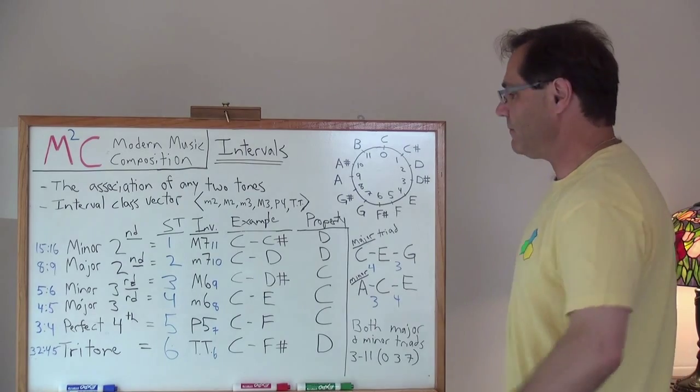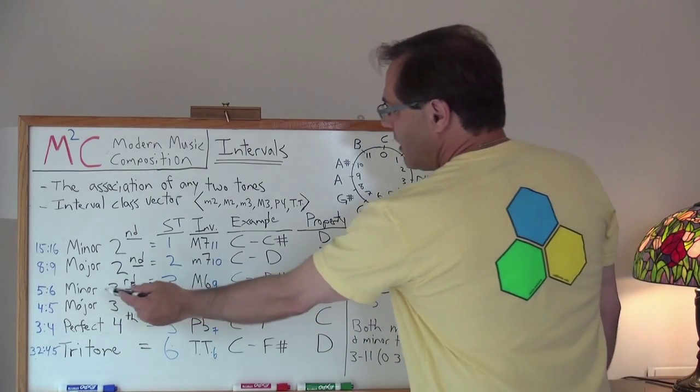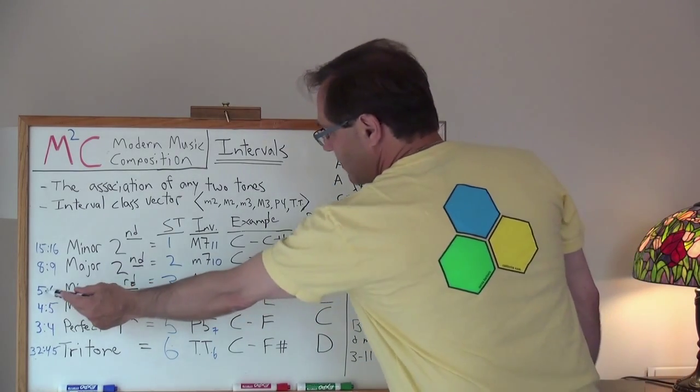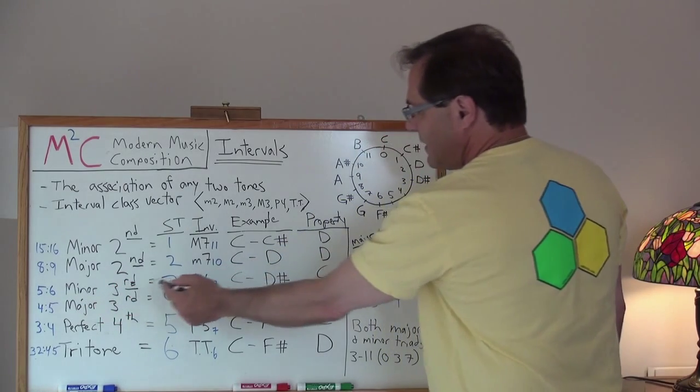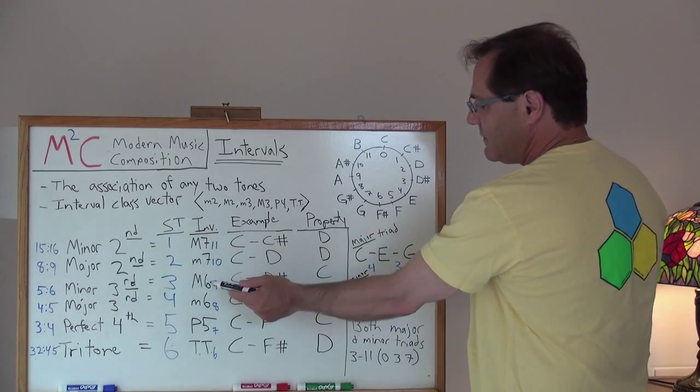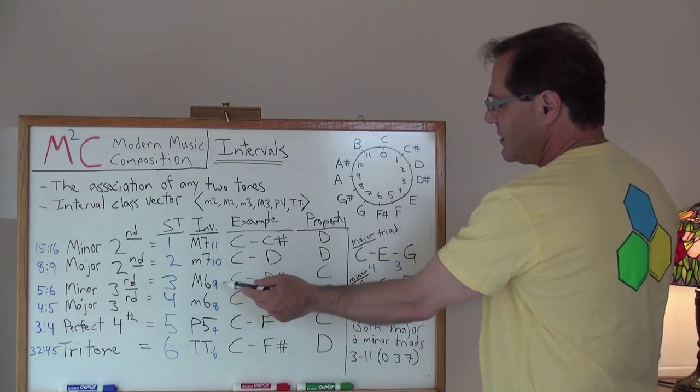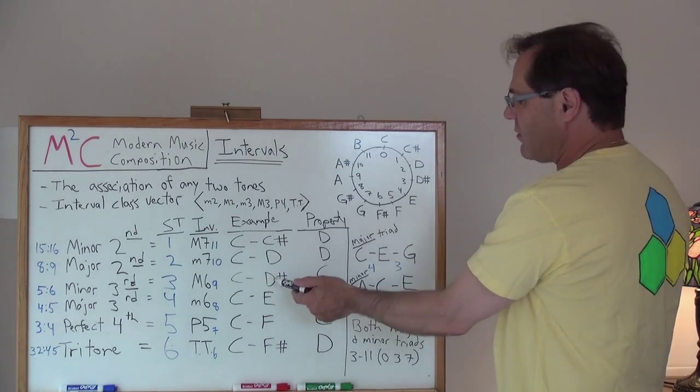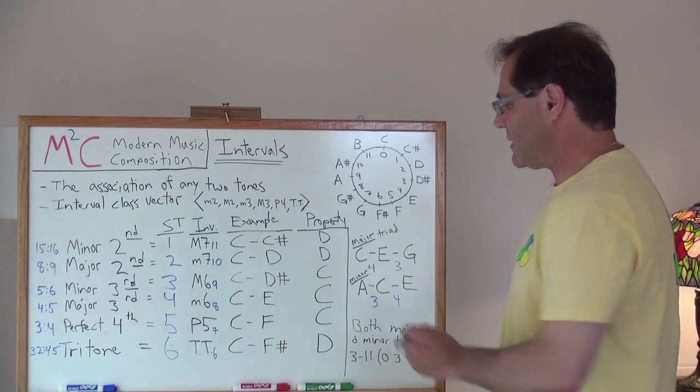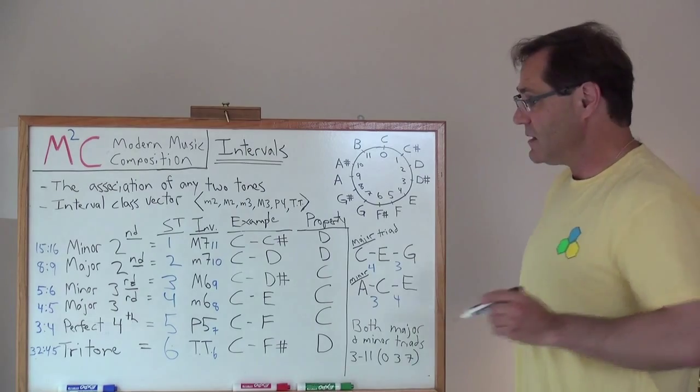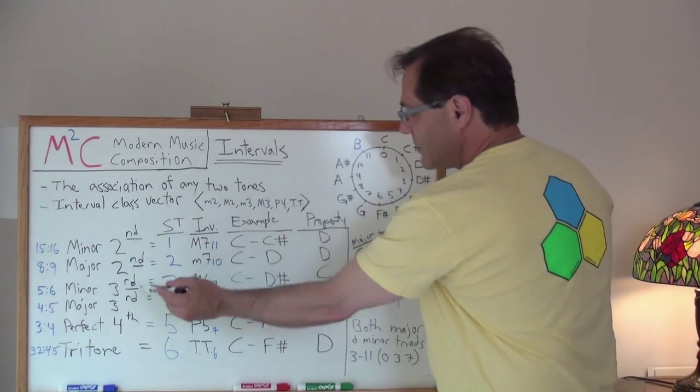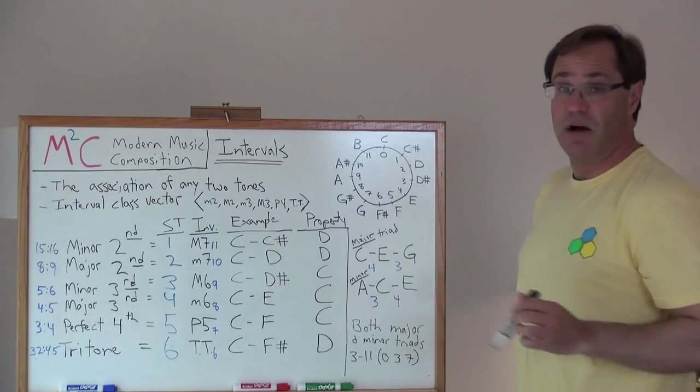Tritone's special. We'll get to that in a minute. A minor third has a ratio of five to six. It's three semitones. Its inversion is a major sixth. And a good example of that would be C to D sharp. It's consonant. So the first two are dissonant. A minor third is consonant.